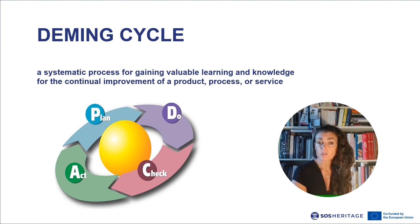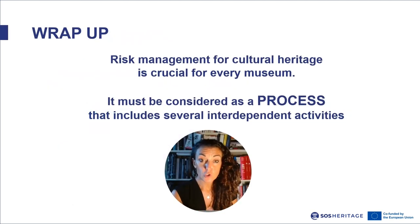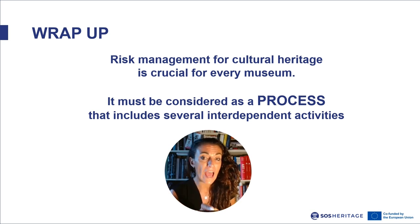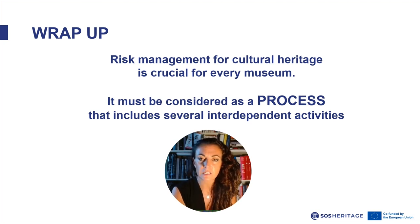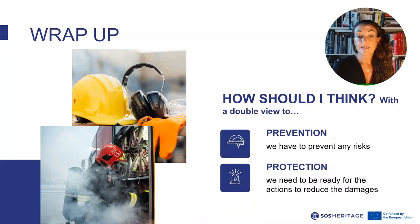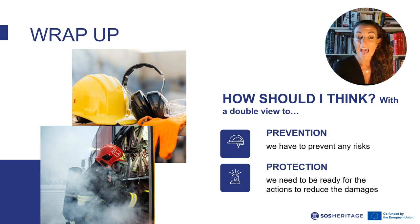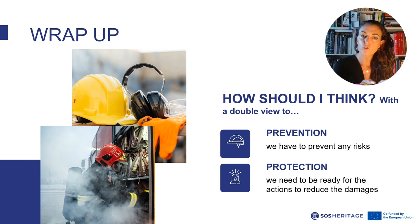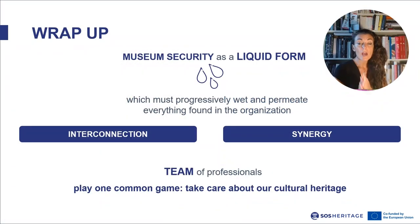This method can and should be applied in any museum activities, including museum security. To sum up this section, risk management for cultural heritage is crucial for every museum. It must be considered as a process that includes several interdependent activities. These activities must be considered with a double view: prevention — we have to prevent any risk and reduce the probability of occurrence — and of course, protection — we need to be ready for action to reduce the damage.